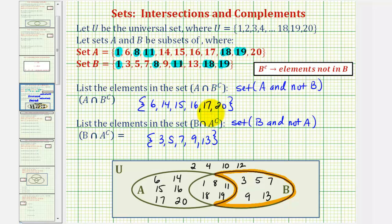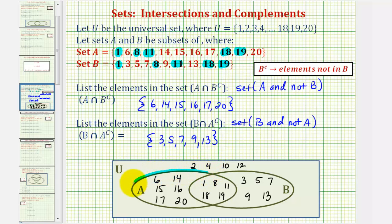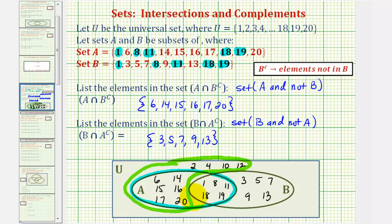Now, to me, this is the most logical way of approaching this problem, but because we do have an intersection here, let's show the intersection of these two sets. Going back to the set of A intersect B complement, notice how if we highlight all of set A, these are the elements in set A, and then we find the set B complement, meaning all the elements that are not in set B — that would consist of not only these elements here, but also these elements in the universal set. The intersection of these two sets, or the elements in both, would be six, fourteen, fifteen, sixteen, seventeen, twenty.